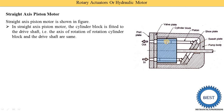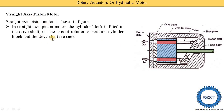Inside this cylinder block a number of holes are provided, and inside these holes the pistons reciprocate. This cylinder block is connected with the driver shaft. The green color portion is the driver shaft and the blue color portion is the cylinder block. The axis of rotation of the cylinder block and the driver shaft are the same — that's why it is called the straight axis piston motor.